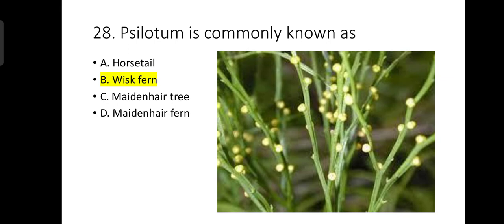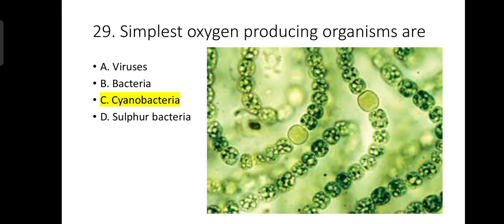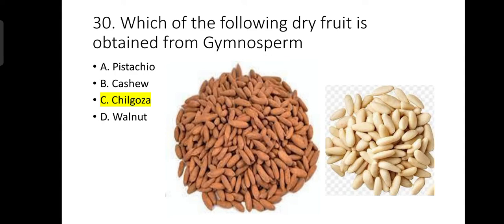Number 28: Psilotum is commonly known as whisk fern. Number 29: The simplest oxygen-producing organisms are known as cyanobacteria. Number 30: Which of the following dry fruits is obtained from gymnosperms? Chilgoza is obtained from gymnosperms; it is the fruit of the Pinus plant.